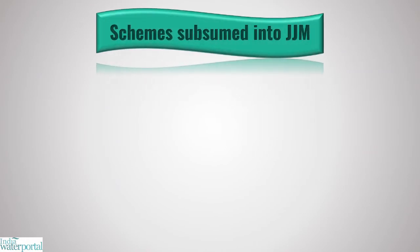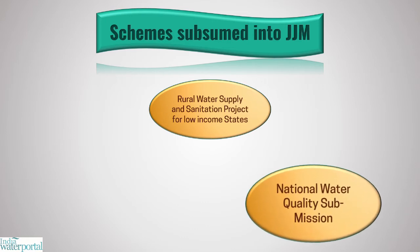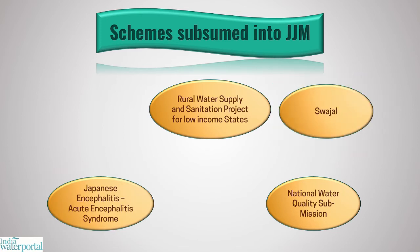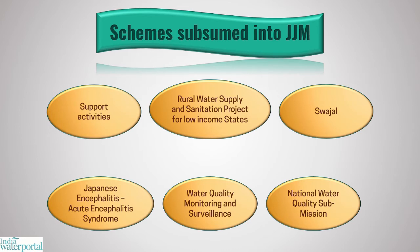Several schemes under the erstwhile National Rural Drinking Water Programme have been subsumed into Jal Jeevan Mission, including the Rural Water Supply and Sanitation Project for Low Income States, National Water Quality Mission, National Water Quality Mission for Japanese Encephalitis, Swajal, and Water Quality Monitoring and Surveillance, which will receive up to 2% of Jal Jeevan Mission funds. All erstwhile National Rural Drinking Water Programme support activities are subsumed under Jal Jeevan Mission and will receive up to 5% of Jal Jeevan Mission funds.